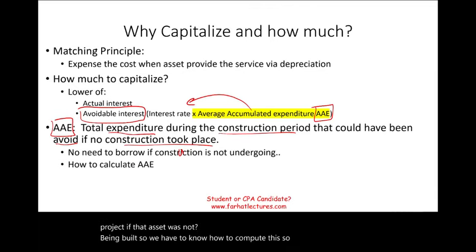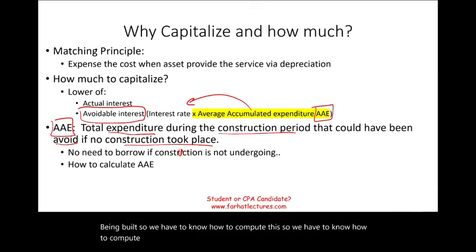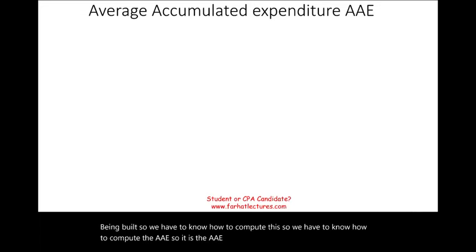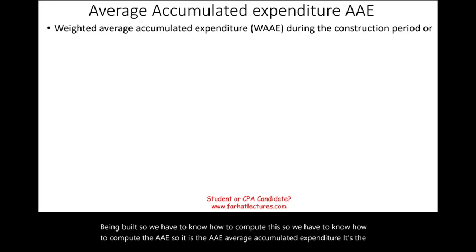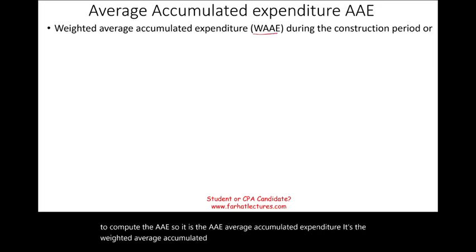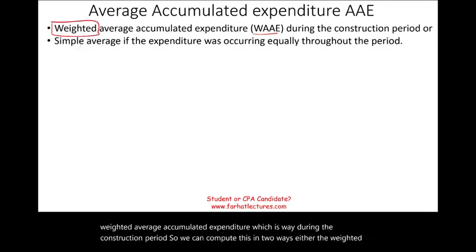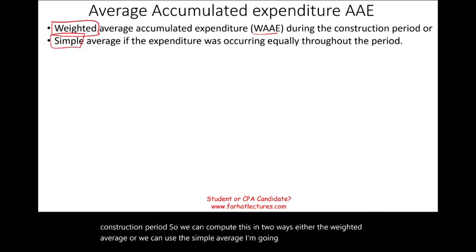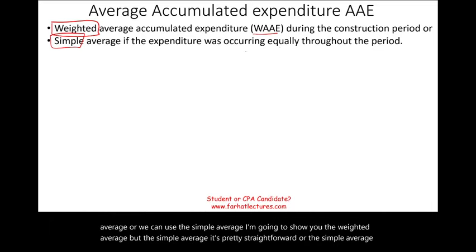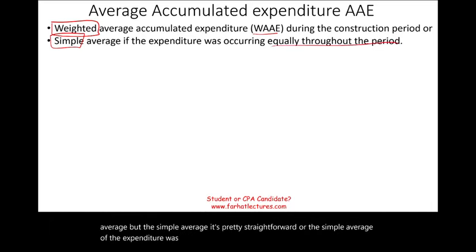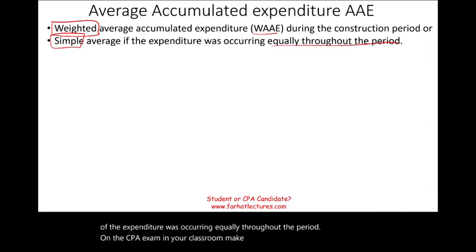So we have to compute the AAE — the Average Accumulated Expenditure — which is the weighted average accumulated expenditure during the construction period. We can compute this in two ways: either the weighted average or the simple average. On the CPA exam and in your classroom, make sure you know whether you are being asked to use the simple average or the weighted average.